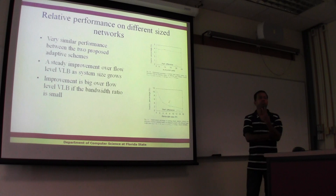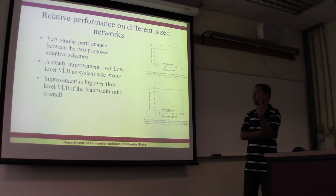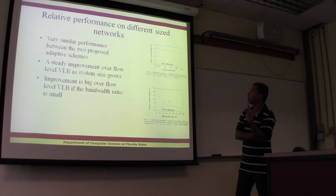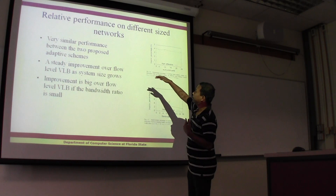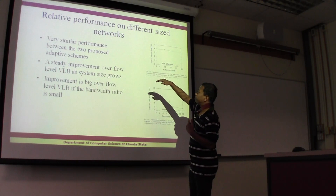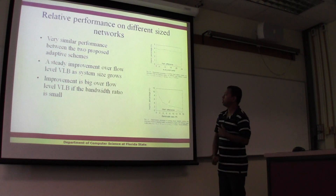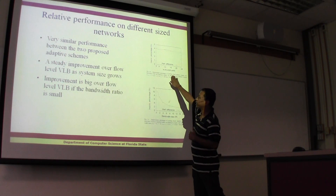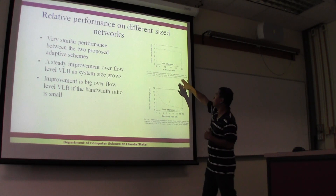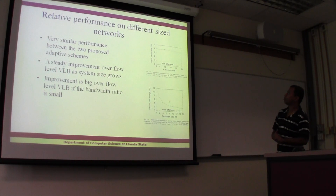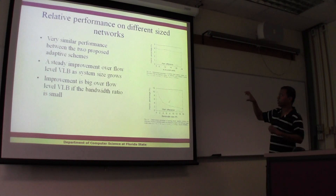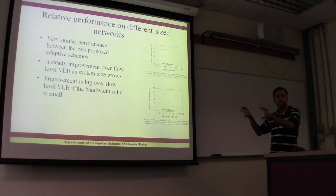A key observation is that the performance between these two adaptive schemes is very similar. There is a difference when comparing either adaptive scheme against flow-level VLB. For example, with varying number of switch ports, the improvement percentage is about 4% and remains pretty constant.